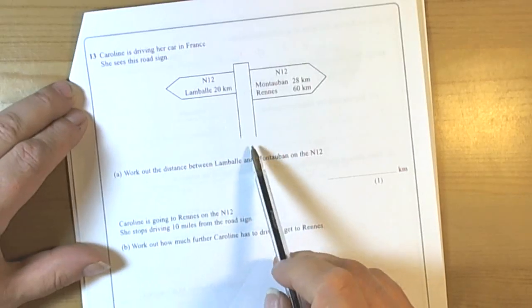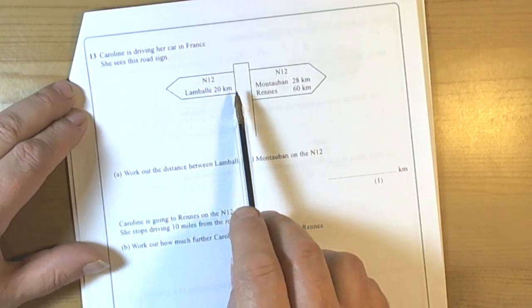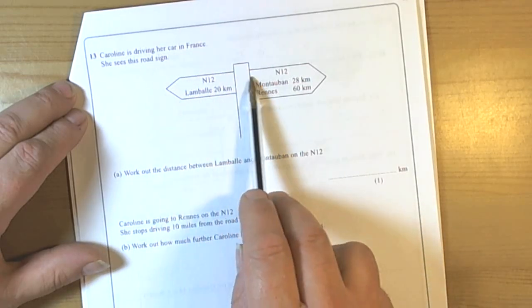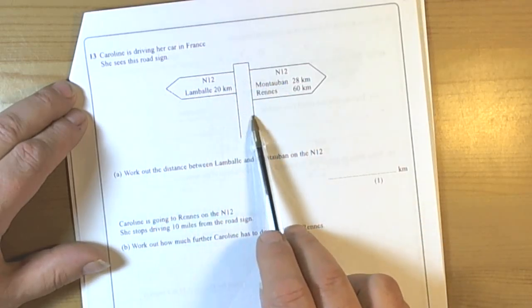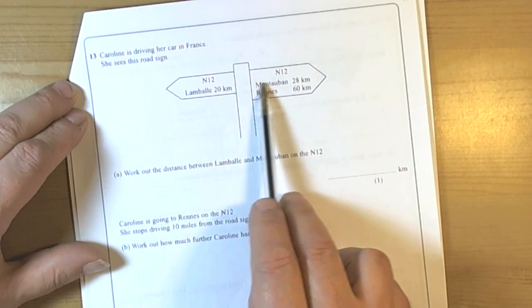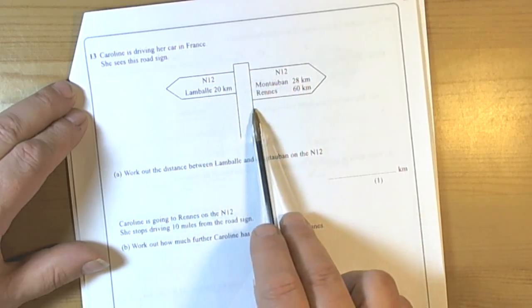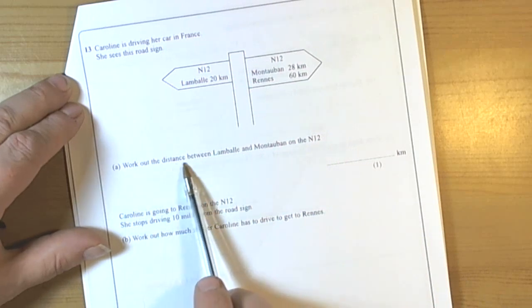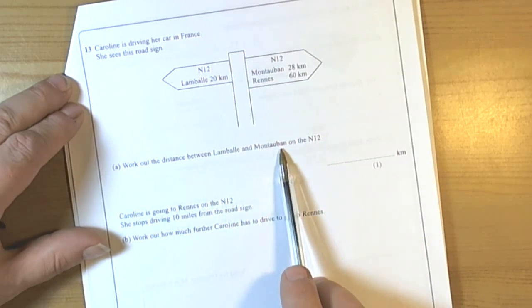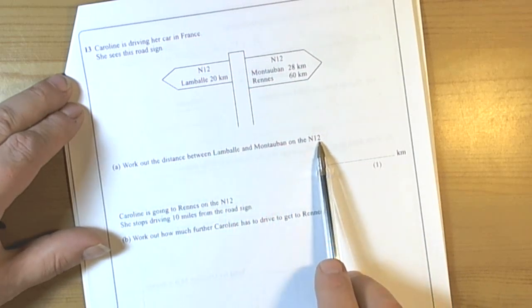So we've got a question here involving travelling in France. She's got a road sign that she's seeing with some numbers we need to look at carefully, because that's the information we're going to use in this question. It's saying work out the distance between Lambelle and Montserban on the N12.